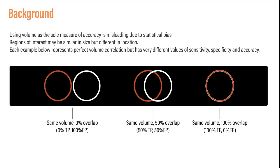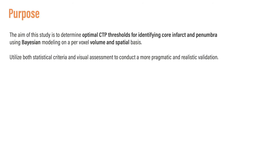Many studies use volume as the sole measure of accuracy. However, this may be misleading due to statistical bias. Simply because two regions of interest are the same in size does not mean that they provide high sensitivity, specificity, or accuracy. As you can see in the diagram below, both areas have the same volume, but due to differences in spatial location, they provide very different levels of true positive and false positive results. The purpose of this study is to determine the optimal CTP thresholds for identifying core infarct and penumbra using Bayesian modeling on a per-voxel volume and spatial basis.